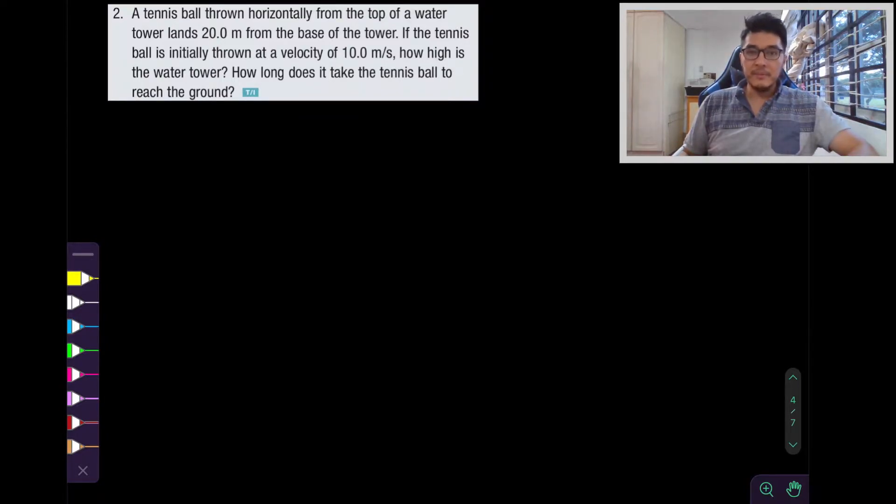So the first step that you should be doing in projectile motion or any kinematics problem is to try to visualize it. Let's visualize this here. We have a tennis ball, and this tennis ball is thrown horizontally. They don't tell if it's horizontally to the left or to the right, but let's assume that it's being horizontally thrown to the right. So here let's draw our person that will be throwing the tennis ball, and they're on top of a water tower. Let's just make any tower, it doesn't really matter.